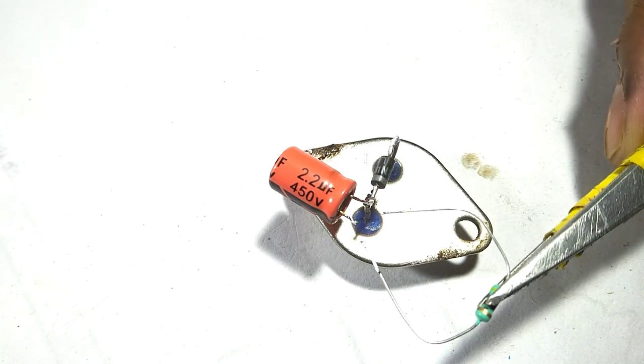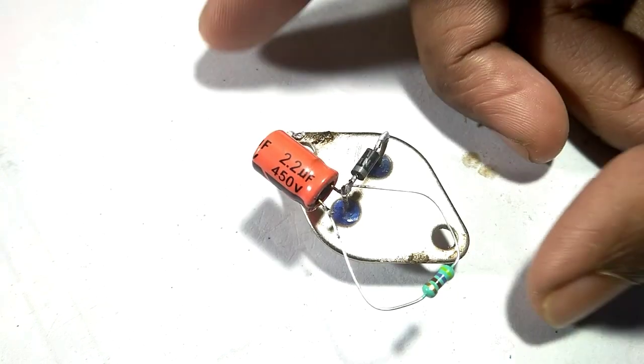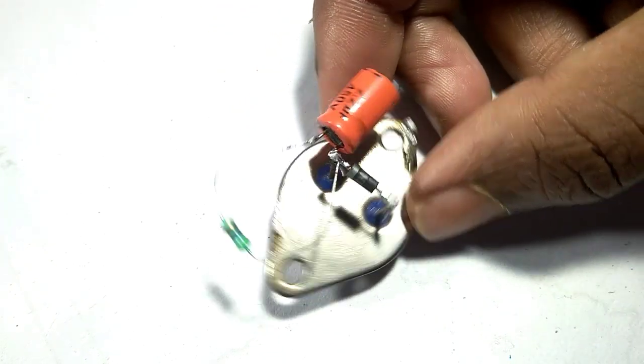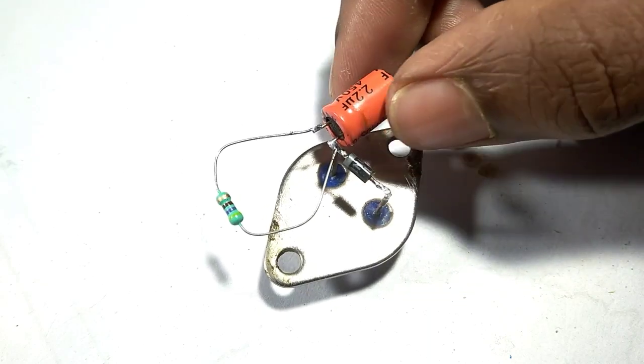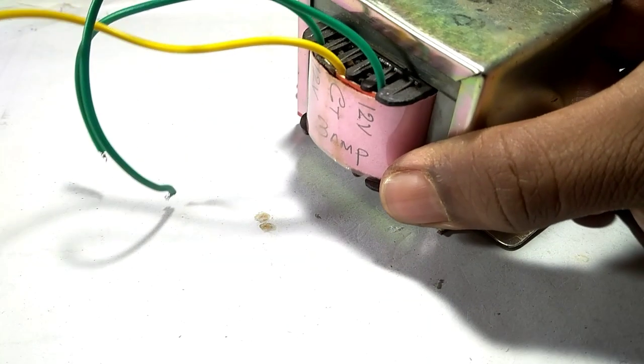You need a 4.7k ohm resistance. Connect the resistance to the capacitor positive and negative pins. All soldering is complete and the small circuit is completely finished.